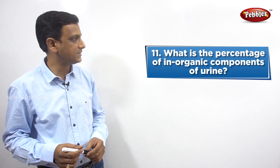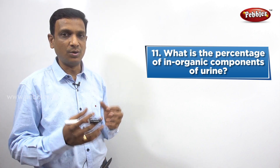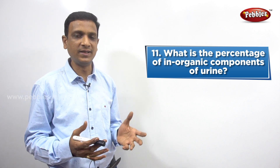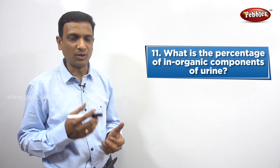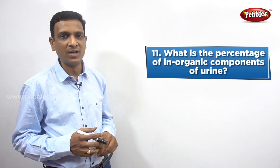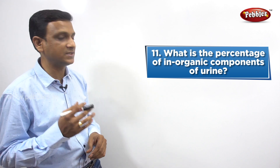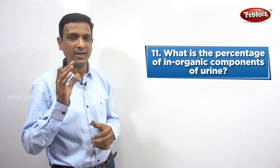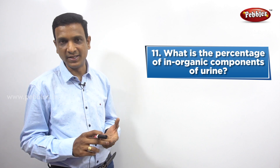The next question: what is the percentage of inorganic components of urine? If we see the composition of urine percentage-wise, urine contains 96% water — so in 100 ml, 96 ml is water. The remaining 4% consists of organic and inorganic constituents.